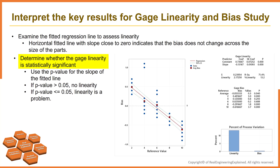A line is fitted through the bias values using ordinary least squares regression. You want the data to form a horizontal line, which indicates that the bias does not change across the size of the part and the measurement system does not contain significant bias. Use the p-value for the slope of the fitted line to determine whether the linearity is statistically significant. If the p-value is greater than 0.05, you can conclude that linearity is not present and you can assess overall bias. If the p-value is less than or equal to 0.05, you can conclude that linearity is a problem, and you can assess bias only at each individual reference value, but not the overall bias.